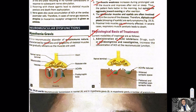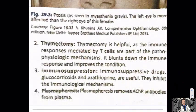The acetylcholinesterase inhibitors used are pyridostigmine and neostigmine. Other treatments include thymectomy and plasmapheresis, which removes the circulating acetylcholine receptor antibodies from the plasma. That completes the session — hope you have enjoyed.